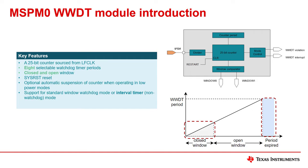You may disable the closed window feature of the watchdog timer by setting its width to zero. The watchdog can also be configured to automatically suspend in low power mode. During this time it will only support the counter function, with the watchdog function disabled, and can trigger periodic interrupts.